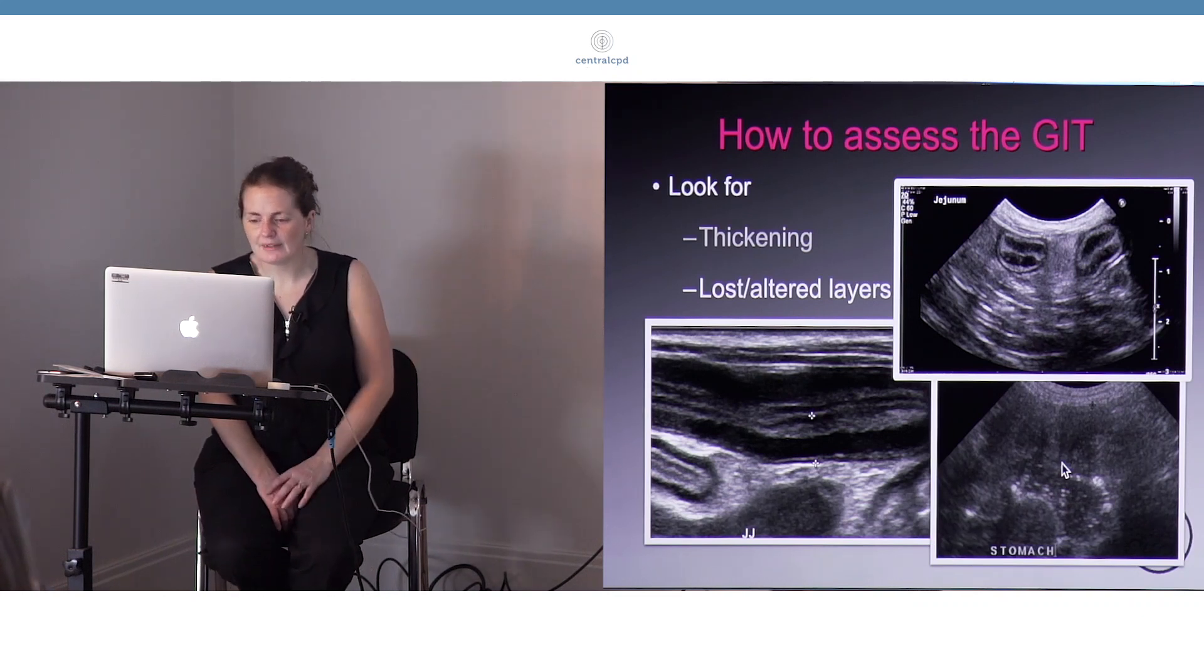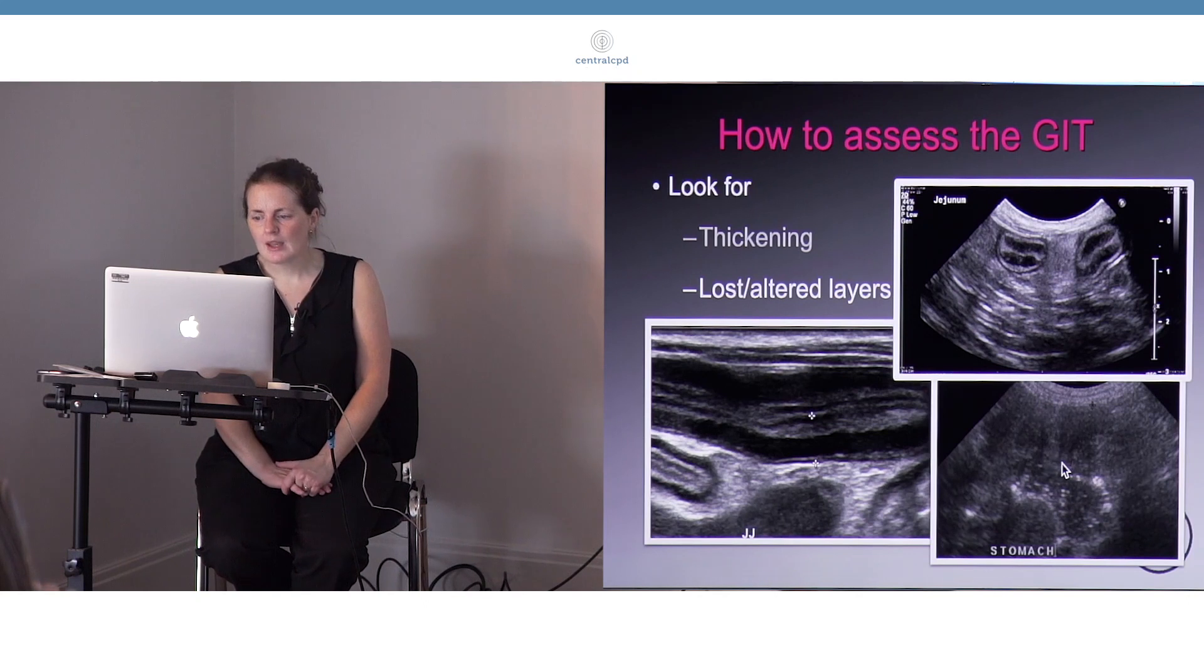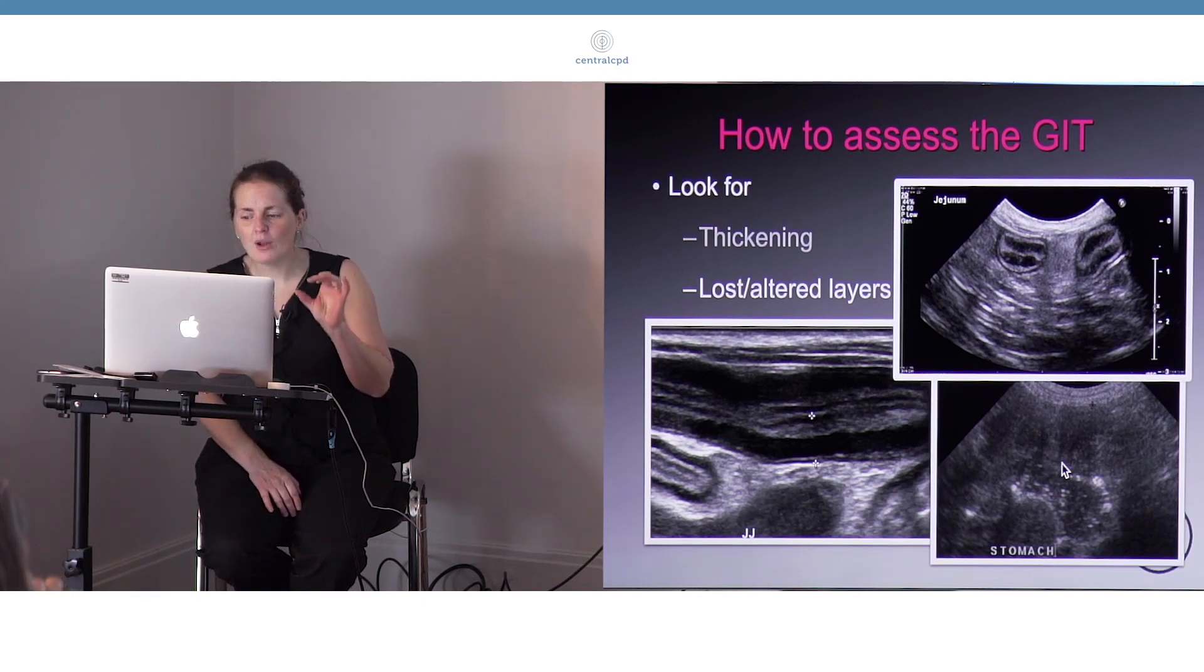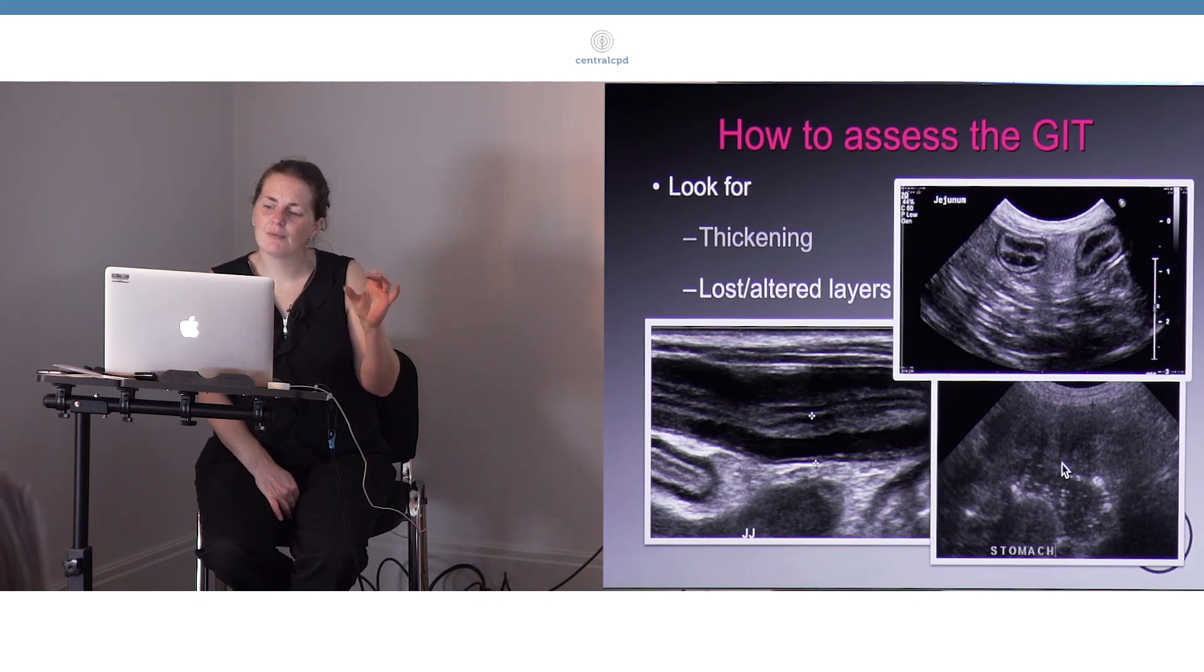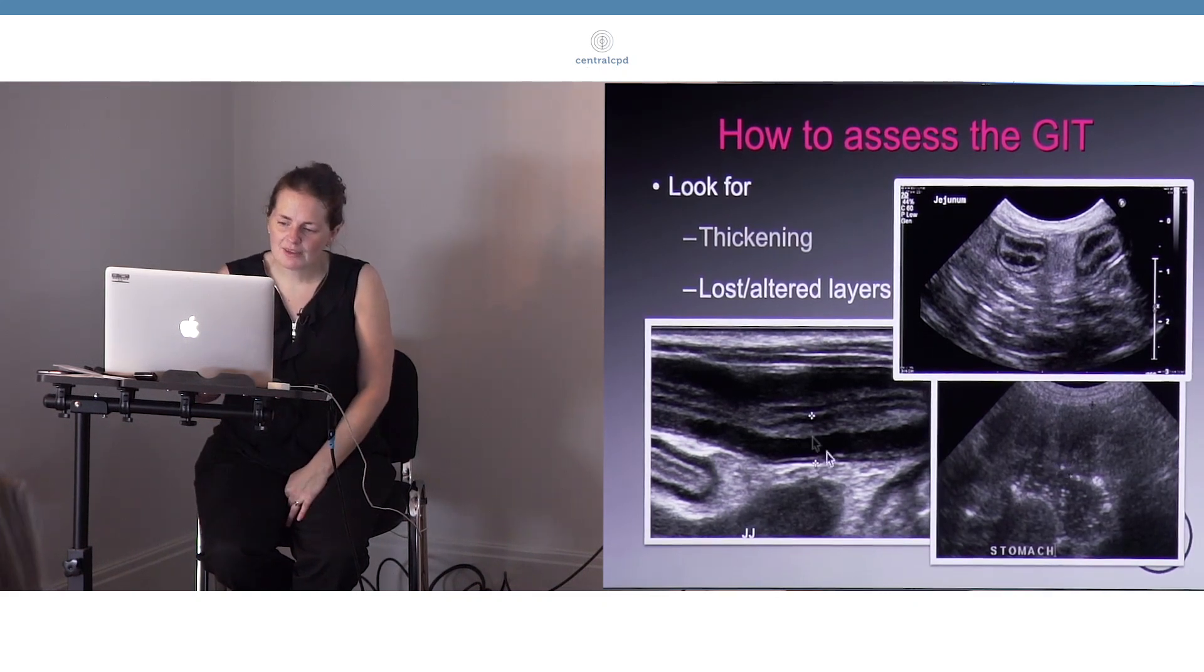Still need your FNAs to confirm it, will be a worrying feature. However, beyond looking for loss of layering and presence of layering, we can actually look at the layers themselves. For a start, when we look at this piece of bowel here, we can see that actually this is the lumen, this linear structure right at the center of the bowel.